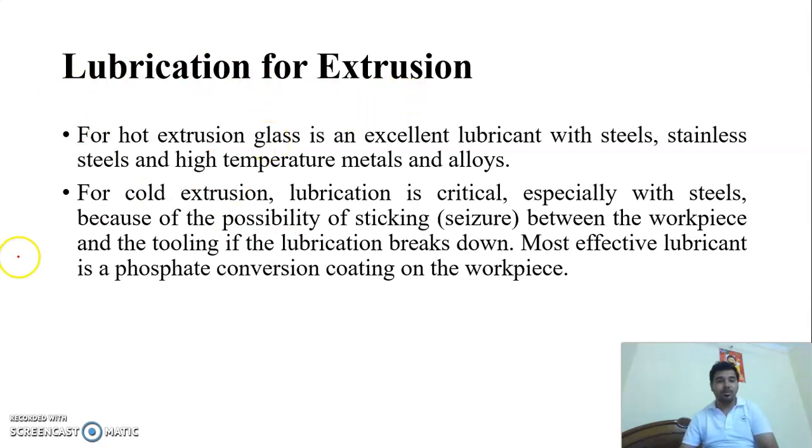Lubrication used in the Extrusion process. For hot Extrusion, glass is an excellent lubricant with the steel, stainless steel and high temperature metal alloys. Why we use the hot Extrusion? Hot Extrusion is generally used when we have the raw material of brittle in nature. Therefore in hot Extrusion, we have to use the lubricant, which is glass.